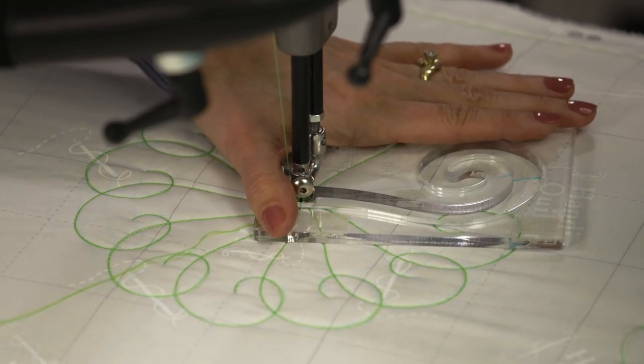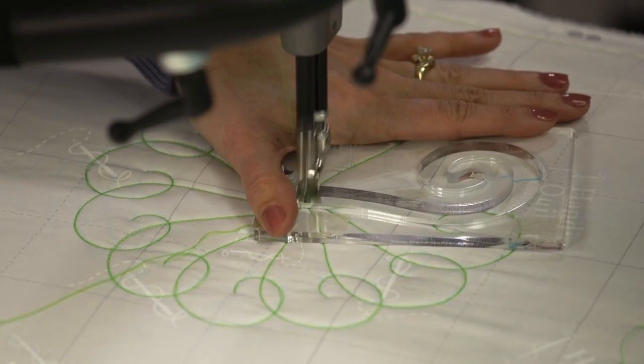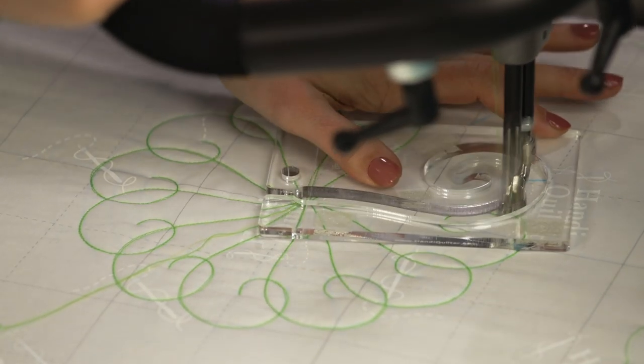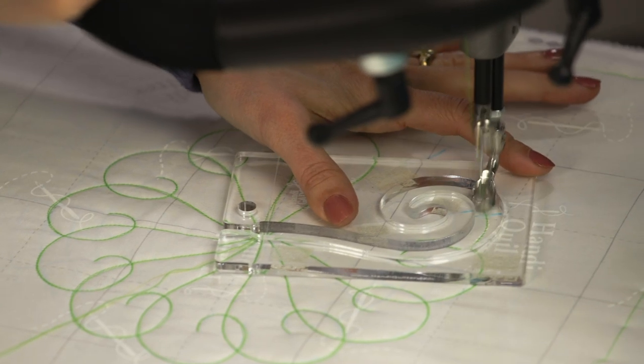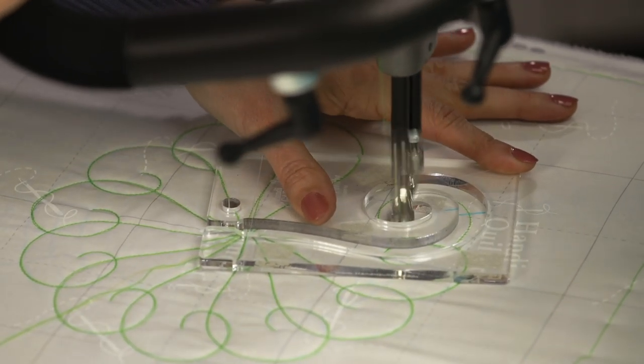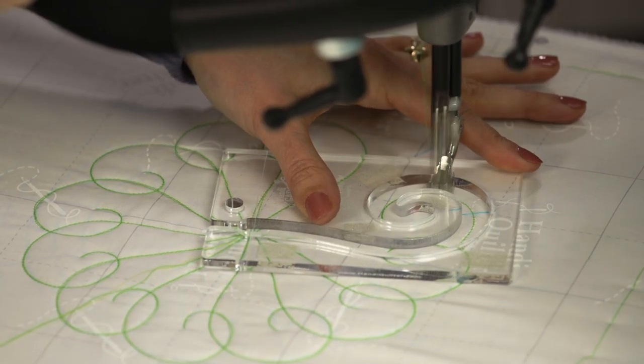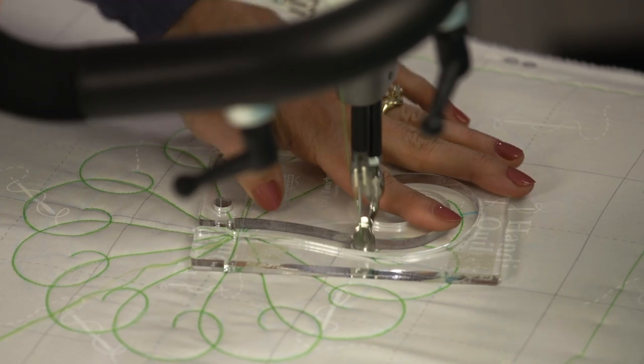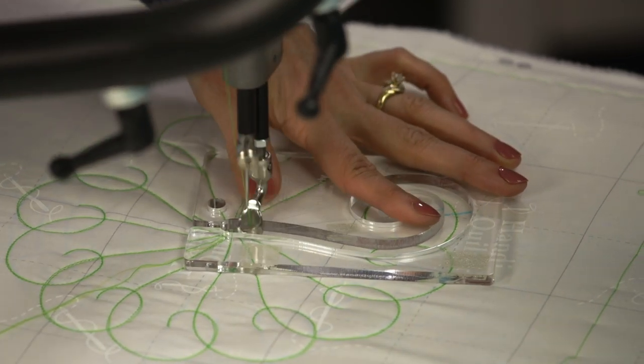Using some firm pressure on my ruler, I'm going to stitch up, hugging onto that ruler, coming back. This is where it's very important that you have that handy grip to prevent your ruler from shifting on you.